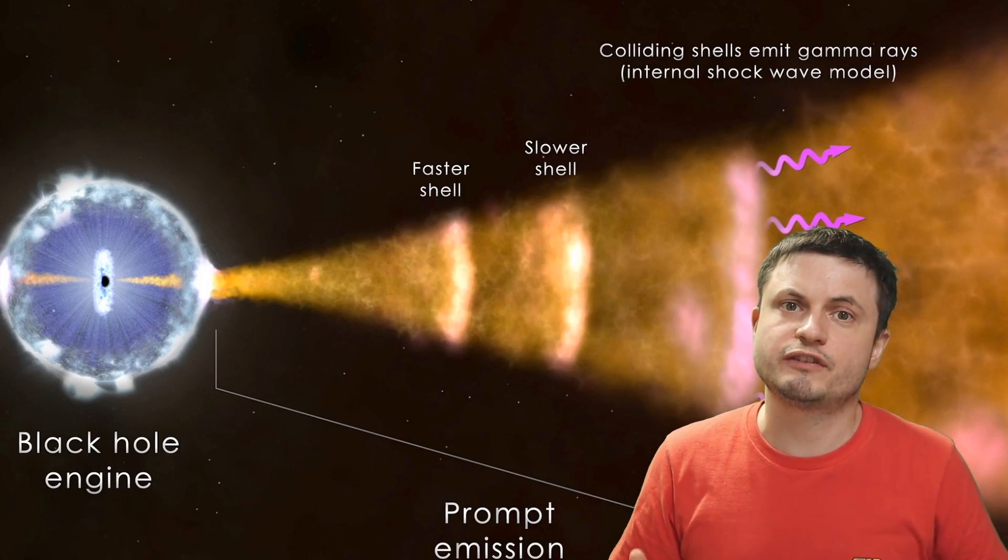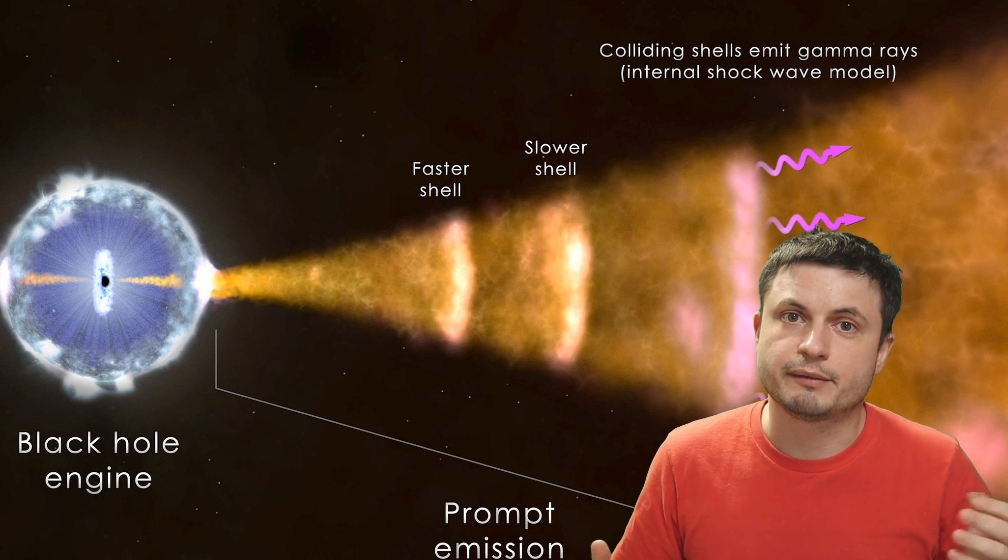And for the most part they seem to be exclusively produced when two neutron stars combine creating a black hole, releasing all of this energy as a kind of a point source that essentially lasts for roughly around two seconds.